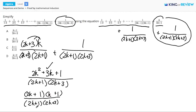So this is the correct factored form, and now notice we have 2k plus 1 in the numerator and the denominator. Those cancel out, and we are left with just k plus 1 over 2k plus 3. So our answer is A. Thanks for watching!